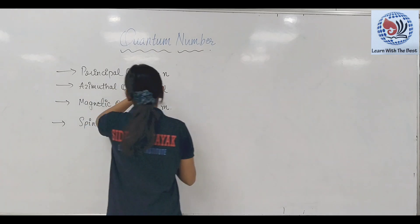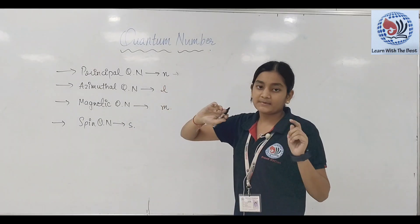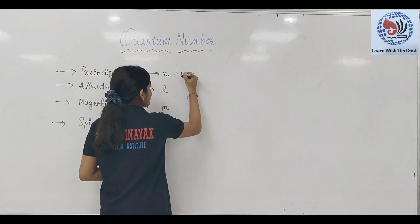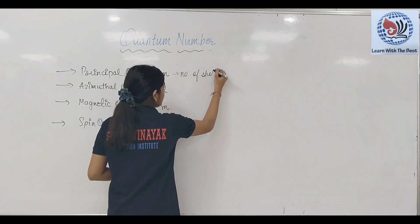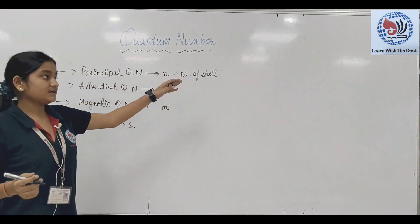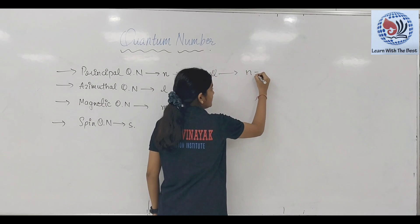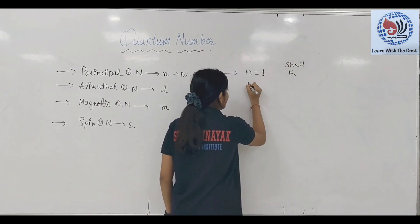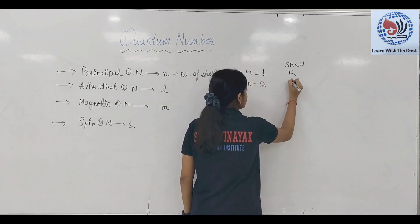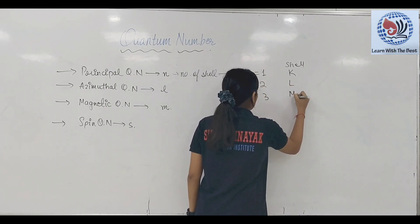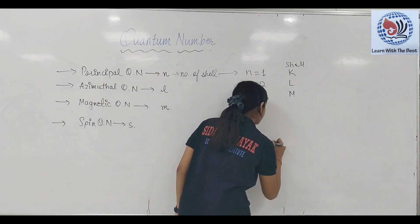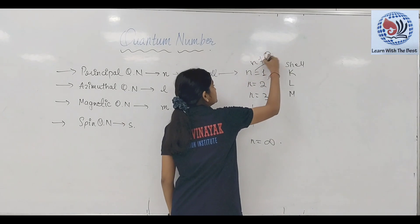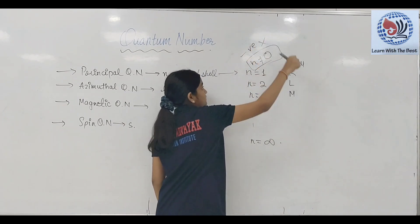Principal quantum number basically tells us about the number of shells. N की value अगर 1 होगी तो K shell होगी, अगर N की value 2 होगी तो L shell, N की value 3 होगी तो M shell — ऐसे-ऐसे N की value infinity हो सकती है, लेकिन कभी N की value 0 या negative नहीं हो सकती।